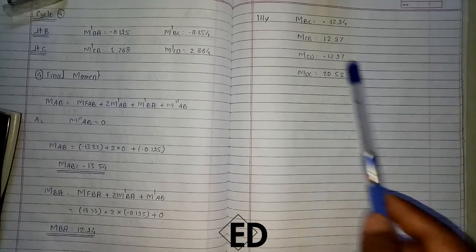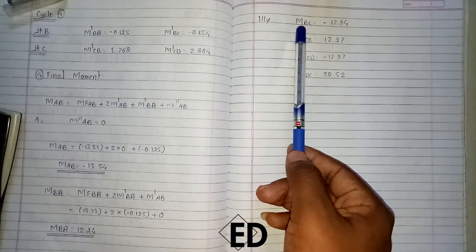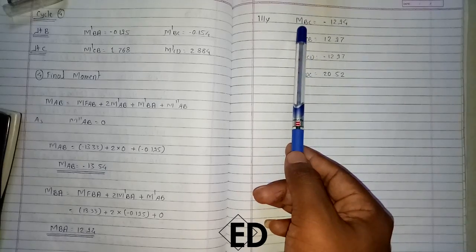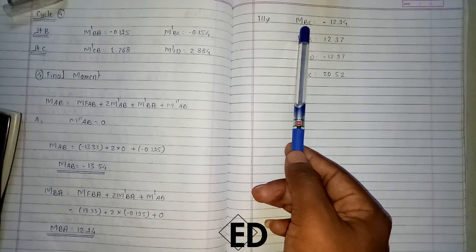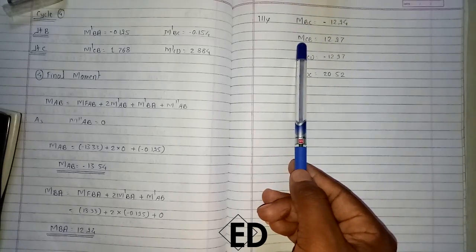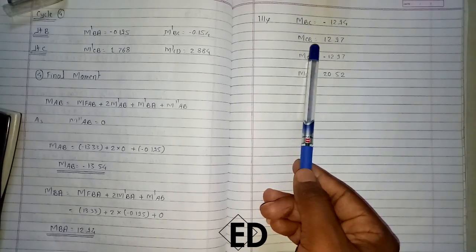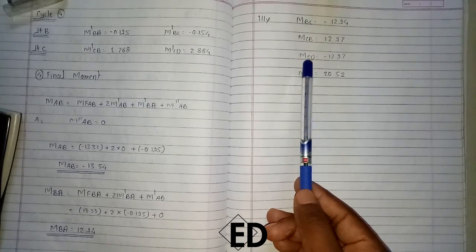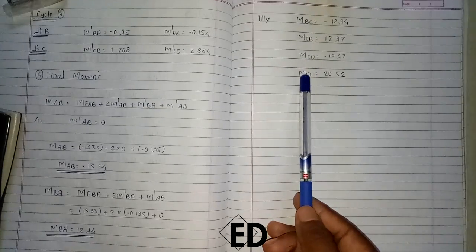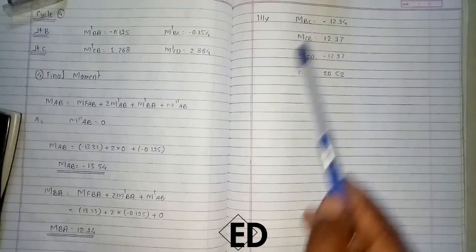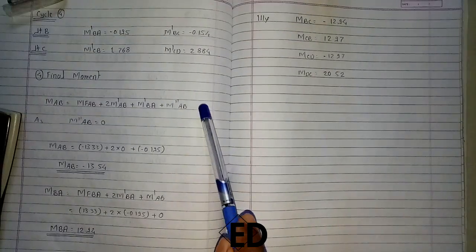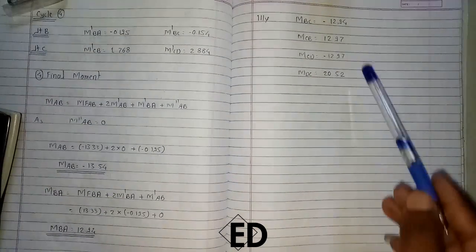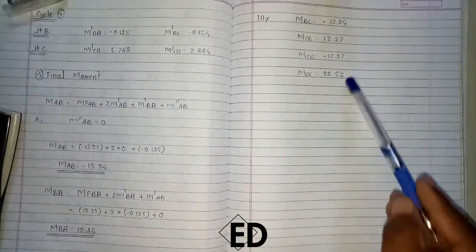Similarly, we calculate for spans BC and CD using the same formula. This gives us the moment from B to C, the moment from C to B, the moment from C to D, and the moment from D to C. By using this formula consistently for all joints, we are able to calculate all the final moments.